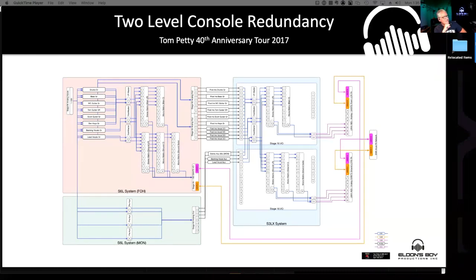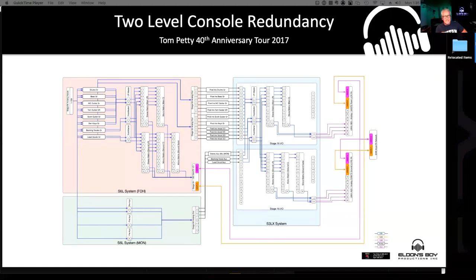Using submasters is an advantage in the S6L system for redundancy. I can take those audio submasters — drums groups, bass, guitars — and send them out the stage rack. Once I do that, if the control surface fails or I even shut it down, that audio will continue to pass out of the stage racks. That opens up a lot of options. If you're mixing without submasters and sending a left-right out somewhere, you could send that out the stage rack as well.